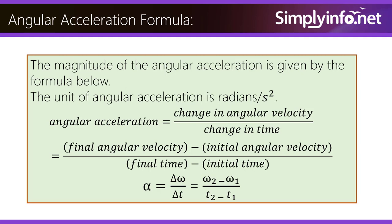by change in time, which equals final angular velocity minus initial angular velocity divided by final time minus initial time. Alpha equals delta omega by delta t, which equals omega 2 minus omega 1 by t2 minus t1.